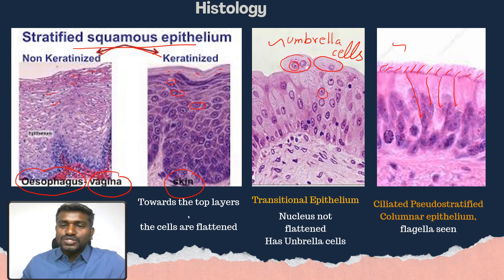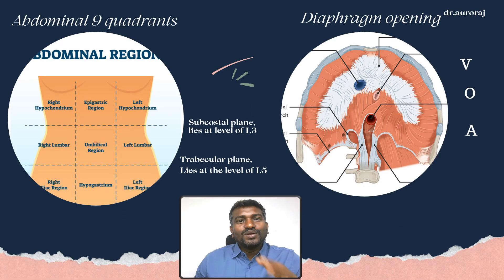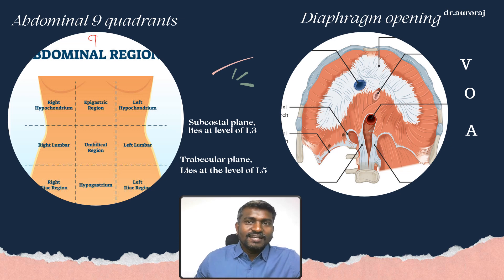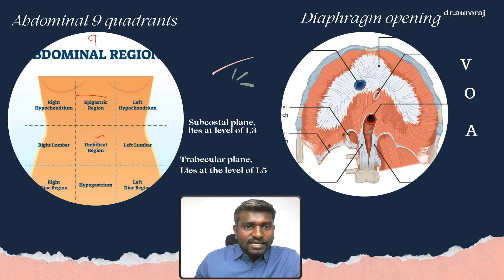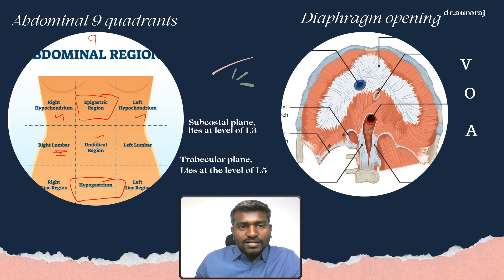Let's look at the abdominal region — there are nine regions. Starting with the umbilicus, called the umbilical region; just above is the epigastric region (stomach area); below is the hypogastrium. To the left and right are the right and left hypochondrium, then the lumbar regions, and finally the right iliac and left iliac regions.